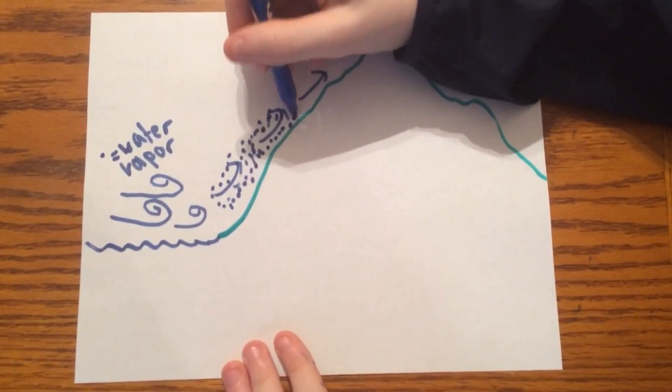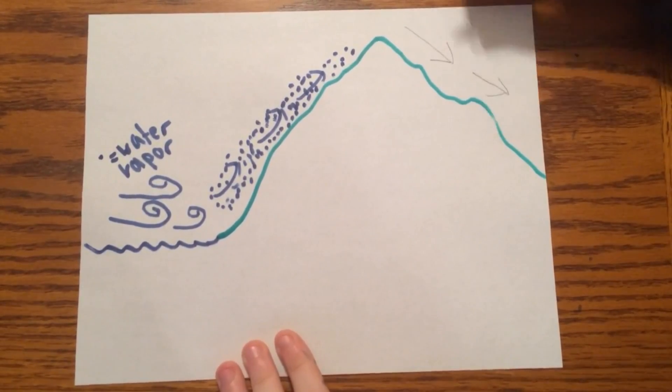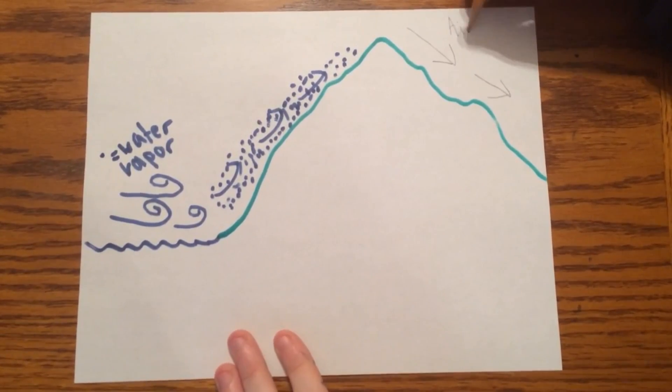Once the air reaches over the mountain and onto the other side, it becomes warmer and dry and creates the rain shadow, which is on the leeward side of the mountain.